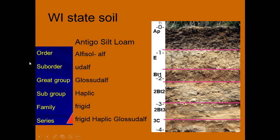So if we go through our order: order is Alfisol, suborder is Udalf, great group is Glossudalf, subgroup is Haplic, family is Frigid. So it's a Frigid Haplic Glossudalf. Going through our smaller and smaller categories, that's how soil taxonomy works.